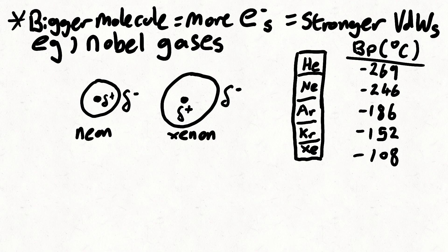The bigger the molecule or atom, the more electrons there are, increasing the strength of the van der Waals forces. Let's have a look at the noble gases, for example. As you go down the group, the size of the atom increases due to more electrons. Therefore, the van der Waals forces are stronger. Therefore, more energy is needed to overcome these forces between the atoms, increasing the boiling point.